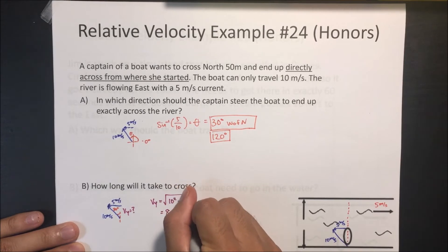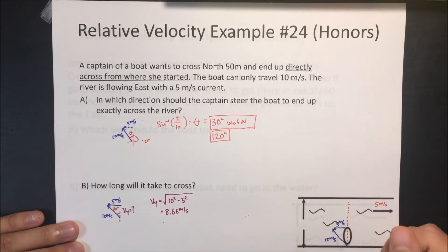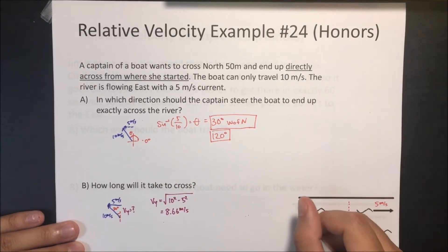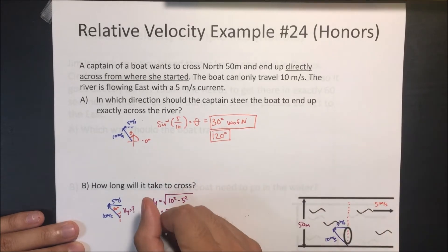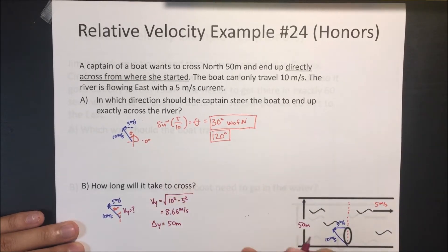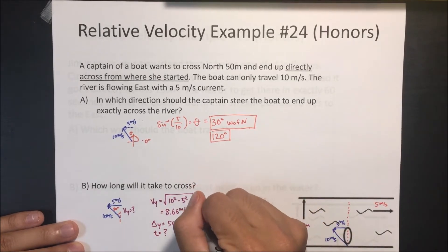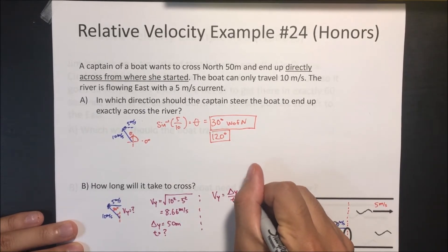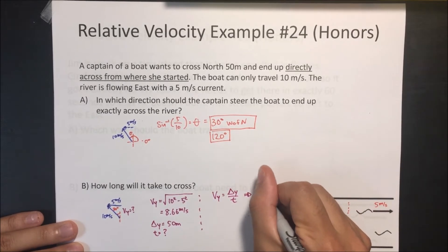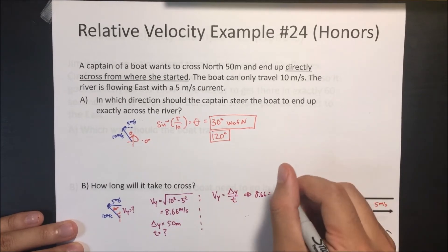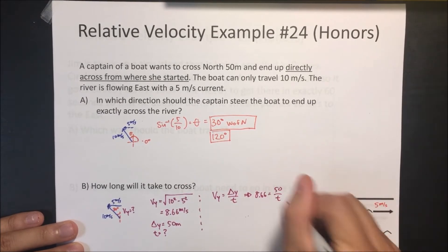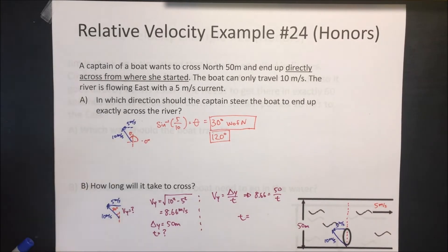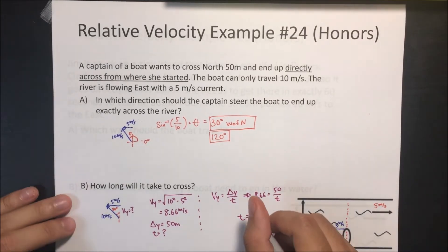That gives vy = 8.66 meters per second. The displacement in y is 50 meters. Using velocity_y = displacement_y / t: 8.66 = 50 / t, so t = 5.77 seconds.